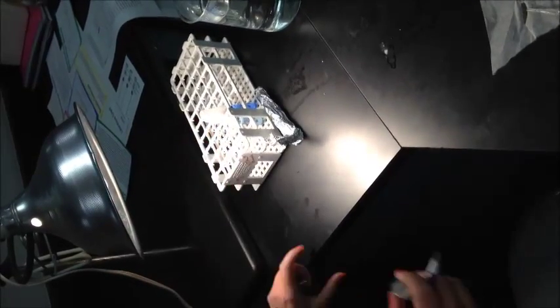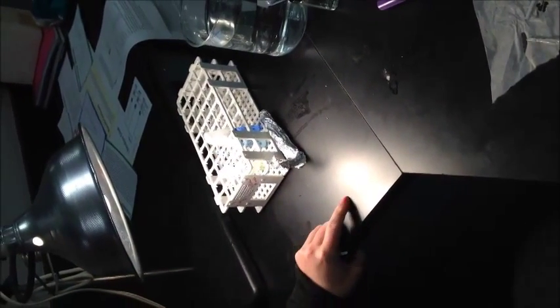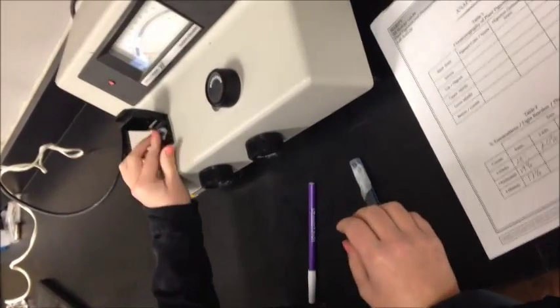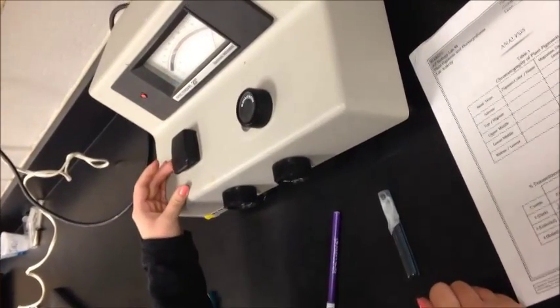Now, after measuring, we go ahead and put them back into the light and then wait another 5 minutes. Before we measure anything, we always have to put cuvette 1 back in and make sure it's set to 100% transmittance because that's our zero.